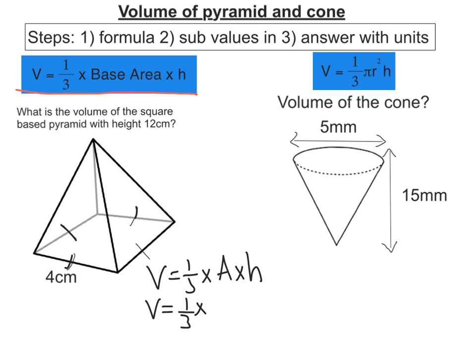Now the area is a square based pyramid, as we've got the lines here. And each side is four, so the area would be four squared times by the height, in the question it's given as 12.